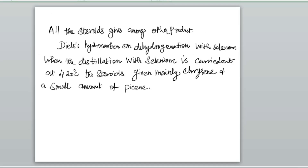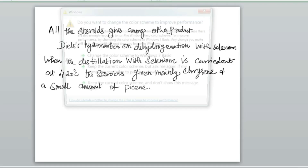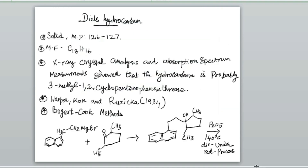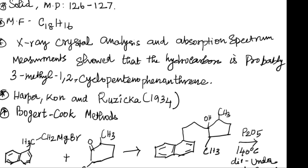In earlier work, the various steroids were designated by trivial names, but the tendency now is to discard these in favor of systematic names. It may be applied when the structure is known as Diels hydrocarbon. Diels hydrocarbon is a solid with a melting point of 126 to 127 degrees centigrade and molecular formula C18H16. X-ray crystallography and absorption spectra measurements show that the hydrocarbon is probably 3-methyl-1,2-cyclopentophenanthrene.